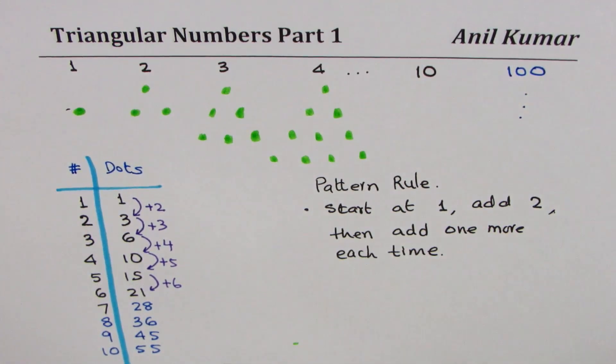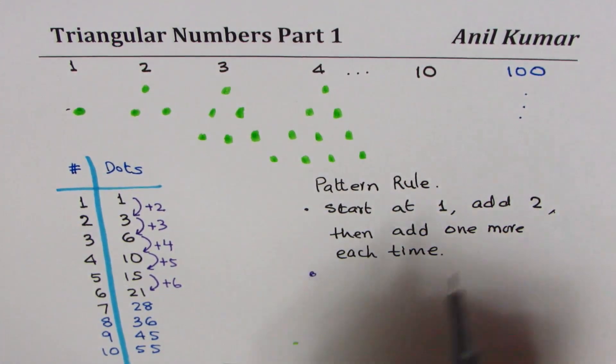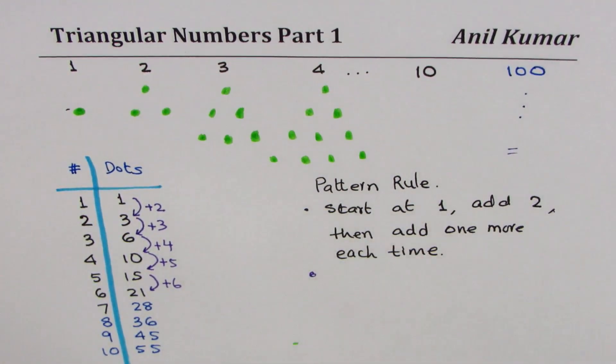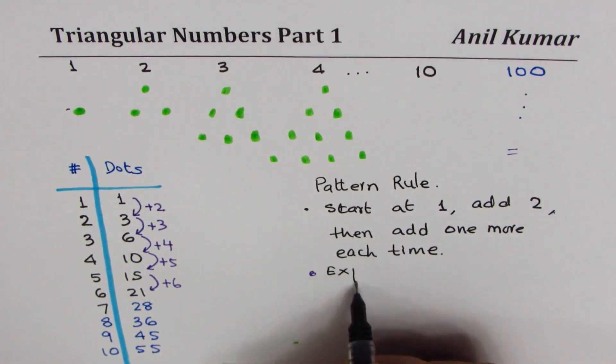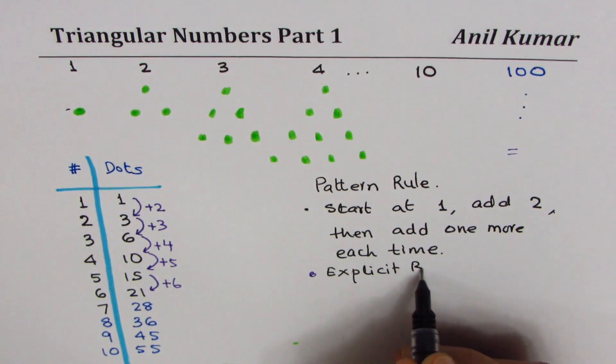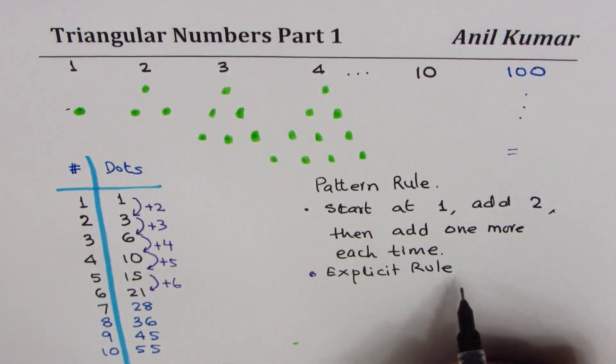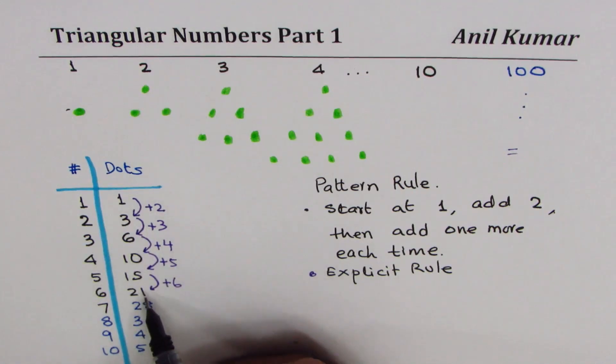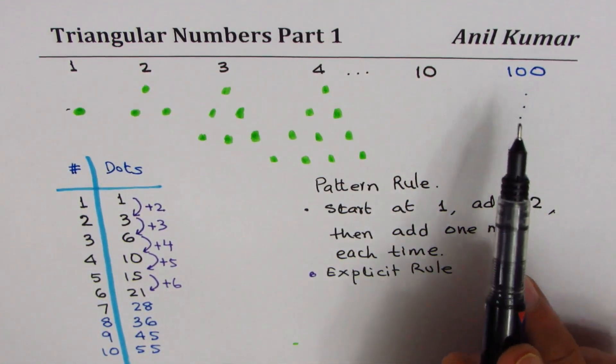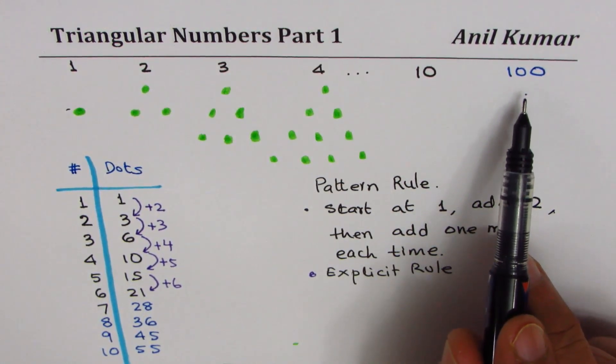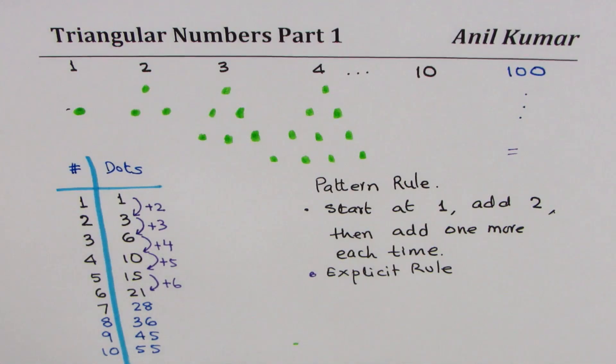We need another kind of rule, which could straightaway give us the number. We call that rule as explicit rule, where, without going through all the sequence, directly we can find how many are there in the hundredth pattern.